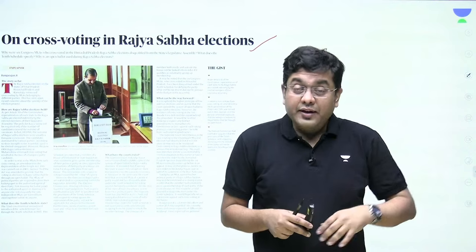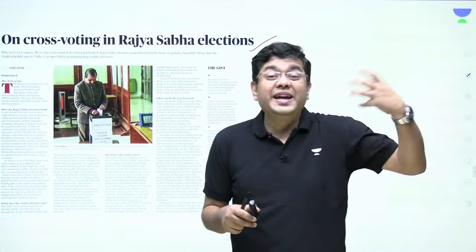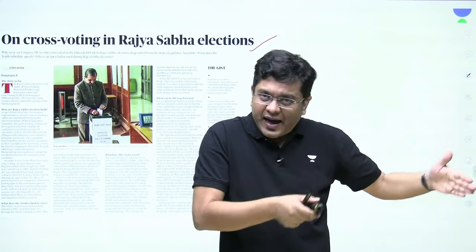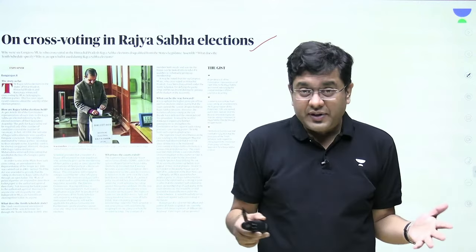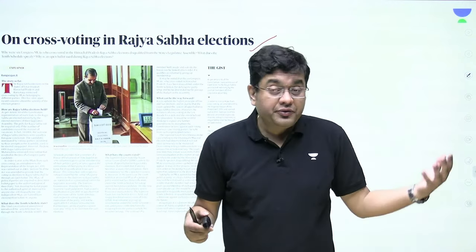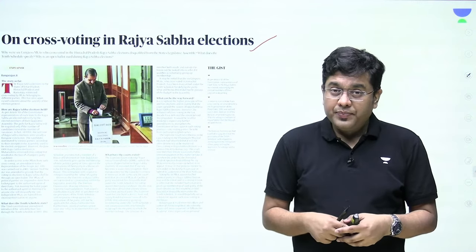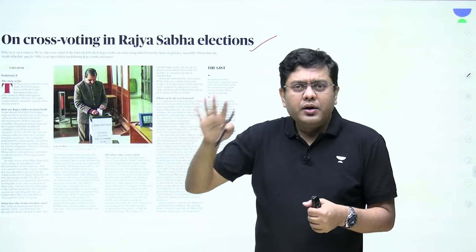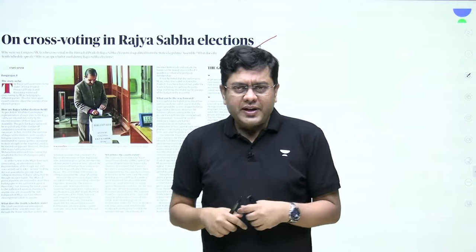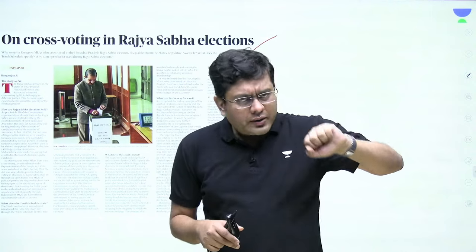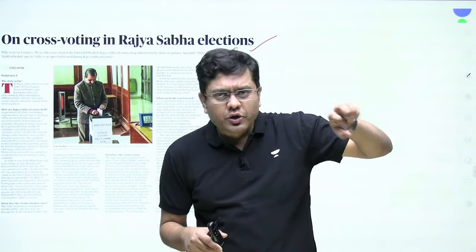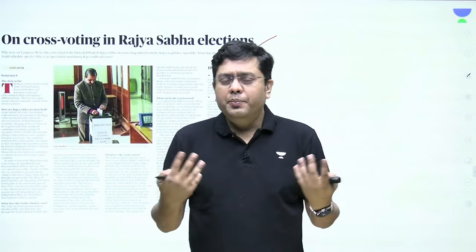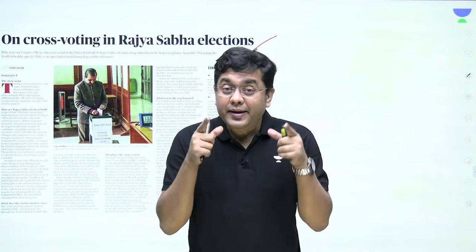Rajya Sabha is called the Council of States — representatives for different states. A state like Uttar Pradesh has many more seats than a state like Goa, which has one. Parties in the legislative assembly nominate members to contest Rajya Sabha elections. Up until 1998, these elections were largely uncontested. In 1998, cross-voting occurred in Maharashtra's Rajya Sabha election, causing a Congress candidate to lose.